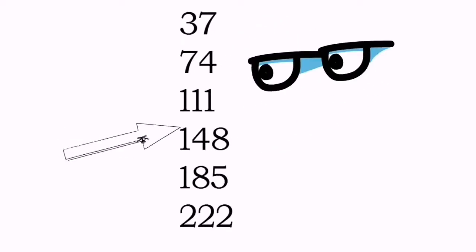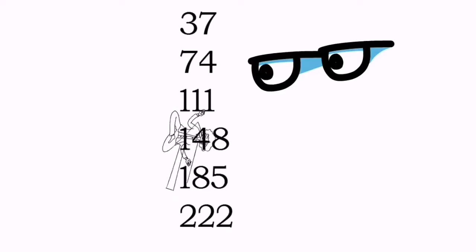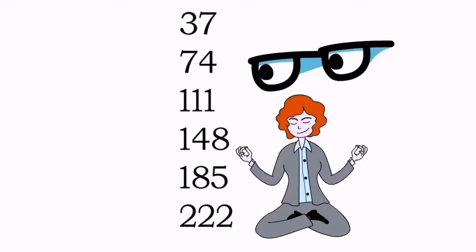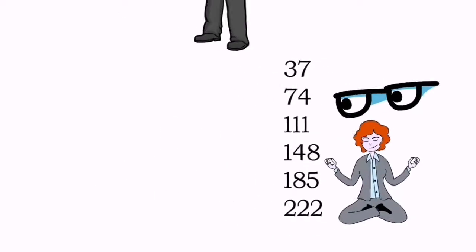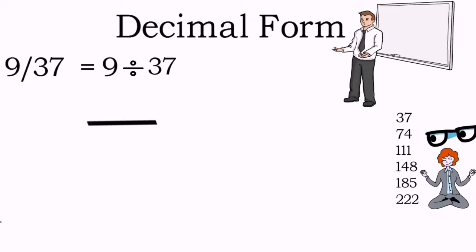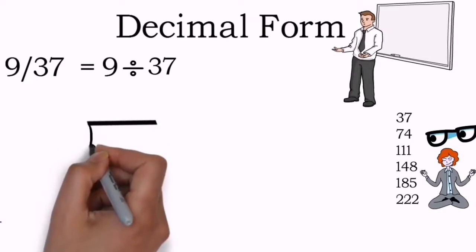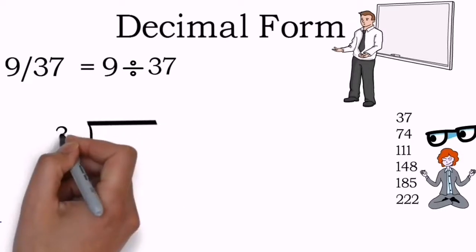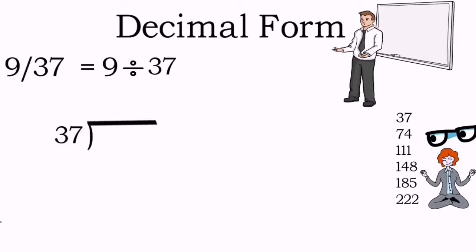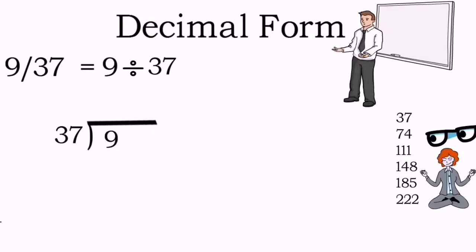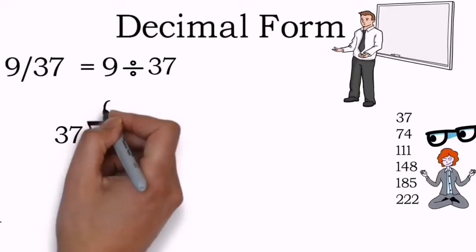Observe it, analyze it, try to learn it and apply it for further questions. This is the easiest way to write the table. Divisor 37 should be written on the outside of the division structure and 9, being the dividend, must be written inside.